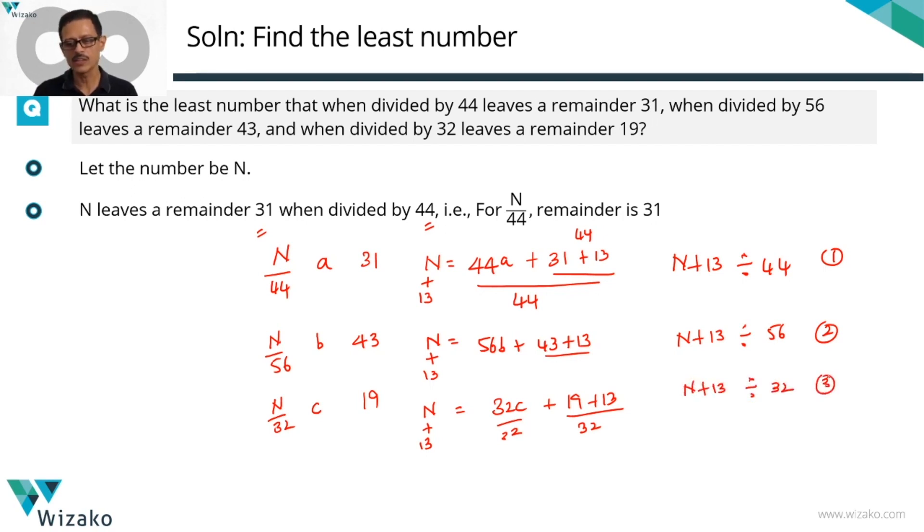So the key inference that we can draw is that N plus 13 is divisible by 44, is divisible by 56, is divisible by 32, which means obviously N plus 13 has to be a multiple of 44, multiple of 56, and a multiple of 32. So it's a common multiple of 44, 56, and 32. We need to find out the least value that N can take. Let's start with the least value for N plus 13. N plus 13 is a common multiple of these three numbers. The least such number is going to be the LCM of these three numbers. So smallest value possible for N plus 13 is LCM of 44, 56, 32.